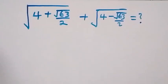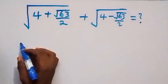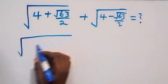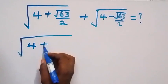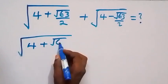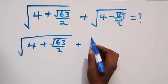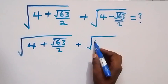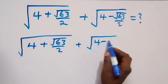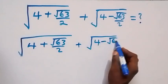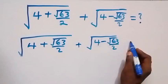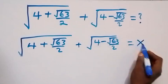Hello, you are welcome to solve this nice math problem involving roots. From here, let's equate this expression to x. So we have square root of (4 plus root 63) over 2, then plus square root of (4 minus root 63) over 2, and let it be equal to x.